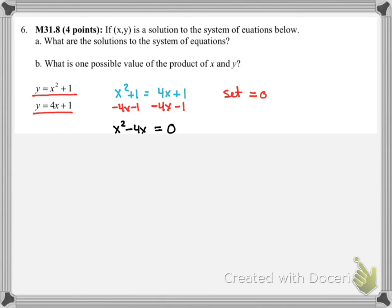Another factoring problem. I can see both terms have X, so I'll factor an X out, and I'll be left with X minus 4.